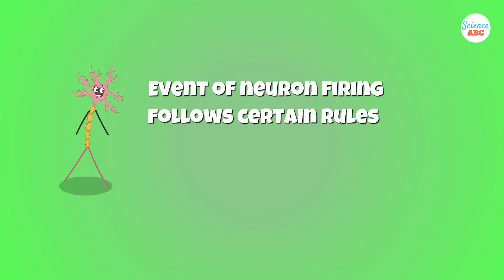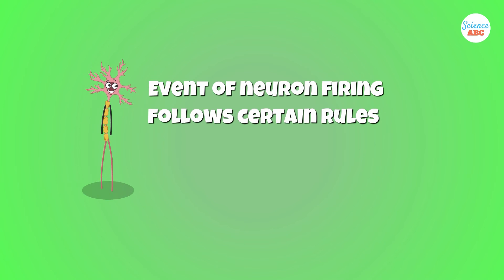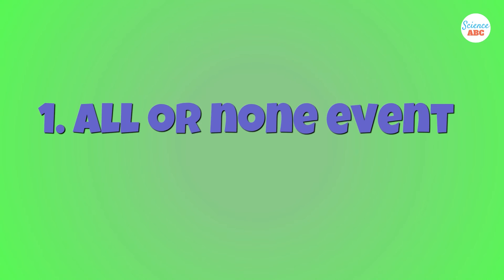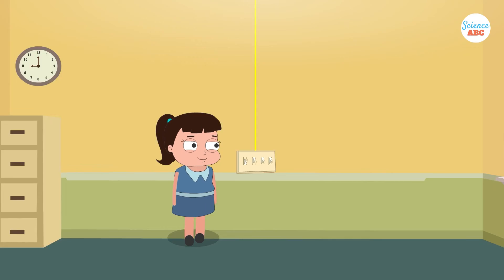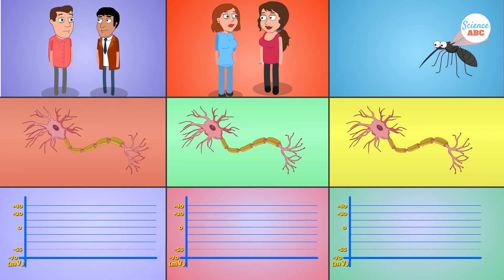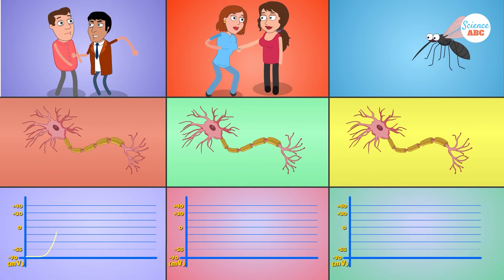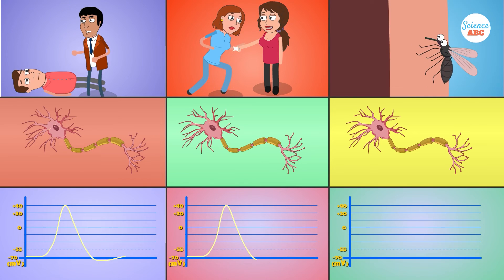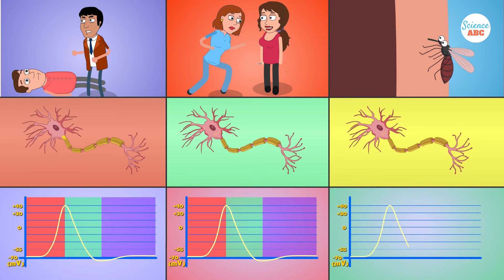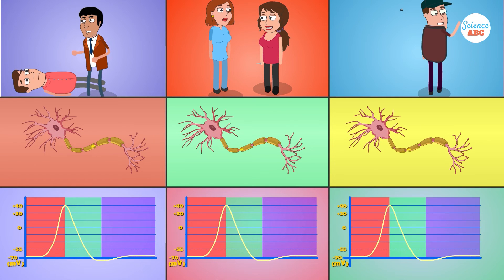This entire event of neuron firing follows certain rules. First, it is an all-or-nothing event. Nerve impulses are much like digital signals — they occur in the same magnitude, regardless of how strong or weak the stimulus is. However, the threshold voltage must be crossed in order to generate it.